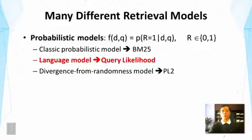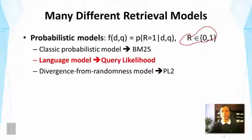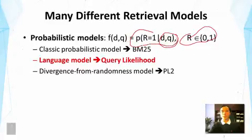In probabilistic models, we define the ranking function based on the probability that a document is relevant to a query. We introduce a binary random variable R here, and we assume that the query and documents are all observations from random variables. The problem of retrieval now becomes to estimate the probability of relevance.